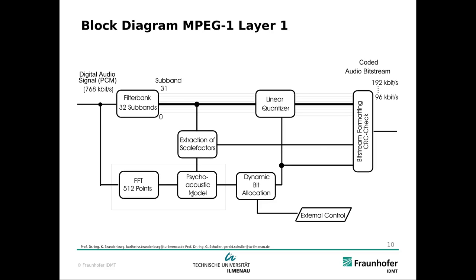Here you can see the block diagram of layer 1. It only has this 32 subband filter bank. Here we have the psychoacoustic model, which tells the encoder what scale factors to use. The scale factors then determine the quantization step size for the subbands, followed by a uniform quantizer. This is then given to the channel together with dynamic bit allocation, resulting in the audio bit stream.